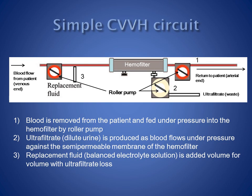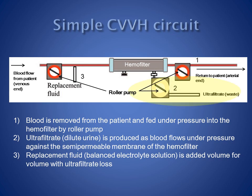Continuous veno-venous haemofiltration is the most commonly used type of renal replacement therapy in intensive care. Although the technology is complex, the technique is essentially simple. Blood is aspirated from a large bore central venous cannula and pumped into a haemofilter — a canister containing a high surface area, hollow fibre, semi-permeable membrane. Plasma water crosses the membrane under hydrostatic pressure in a process called ultrafiltration. Solutes with a molecular weight of less than 50,000 Daltons are dragged across the membrane by a process termed convection.